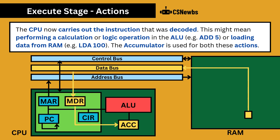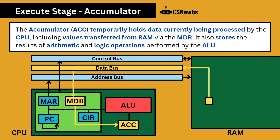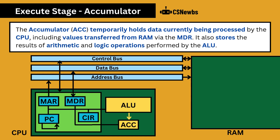The accumulator is used for both of these actions. The accumulator is a register that temporarily holds data currently being processed by the CPU, including values transferred from RAM via the memory data register. It also stores the results of arithmetic and logic operations performed by the arithmetic logic unit.